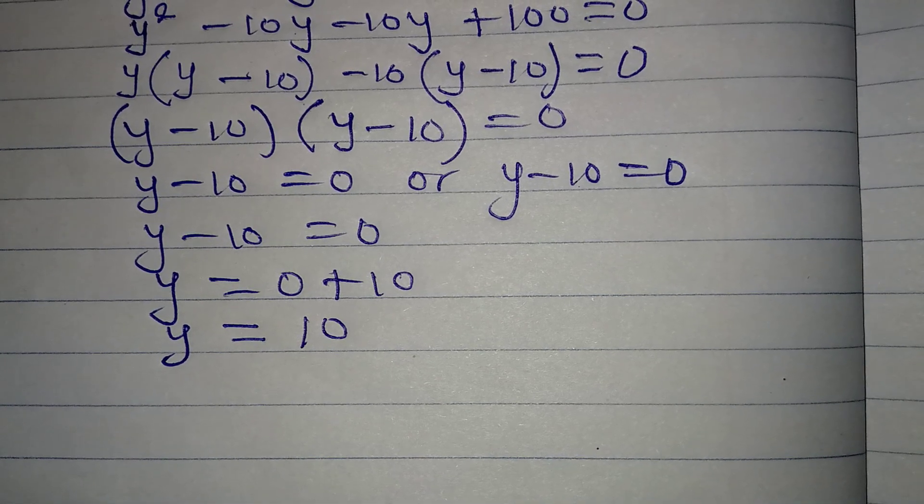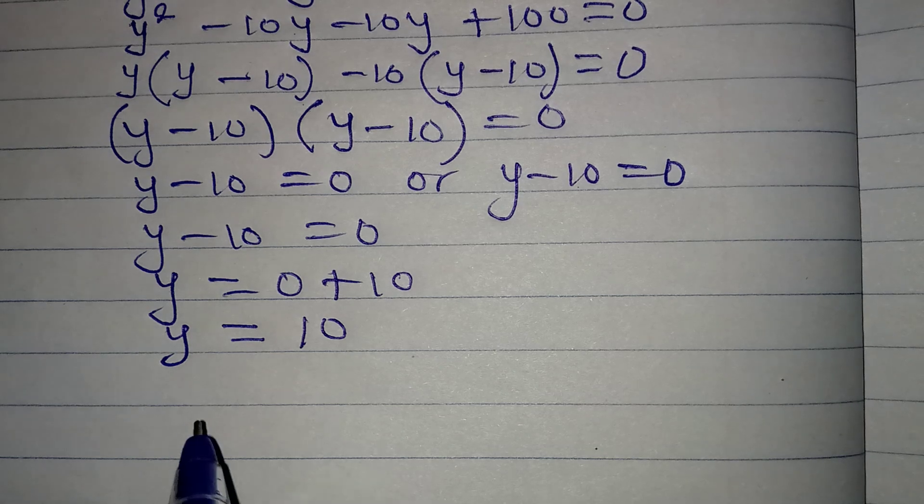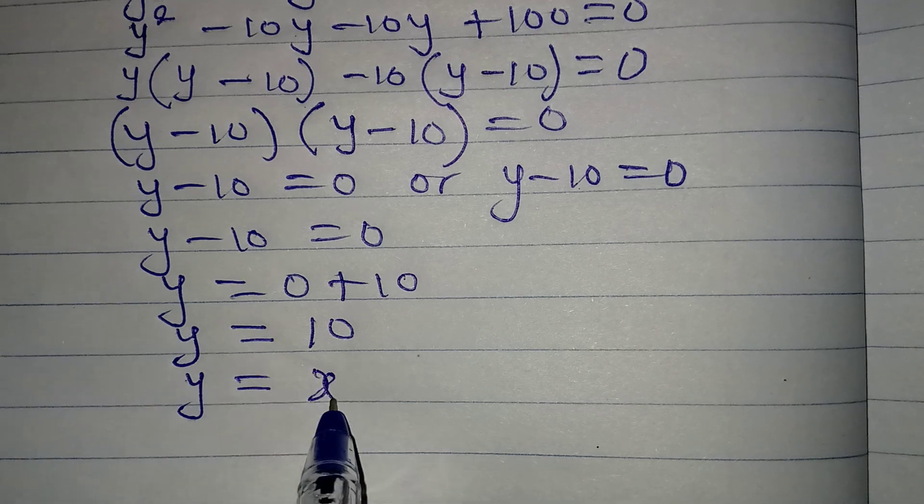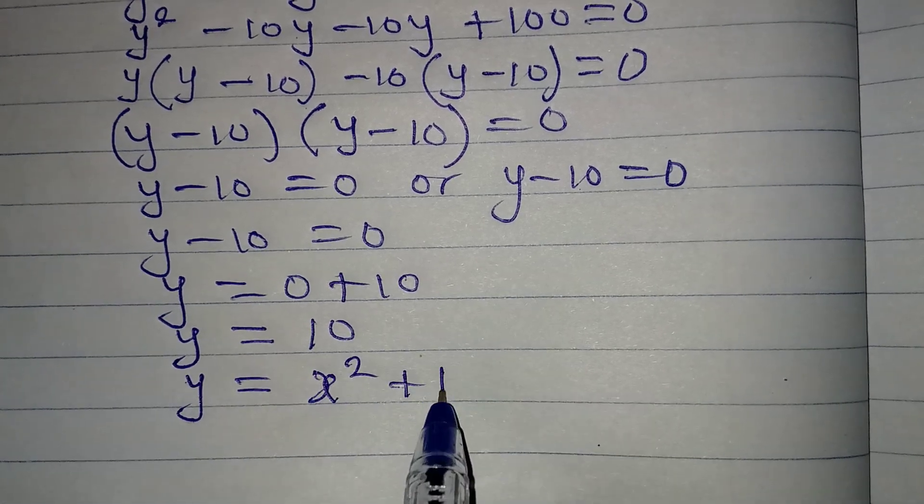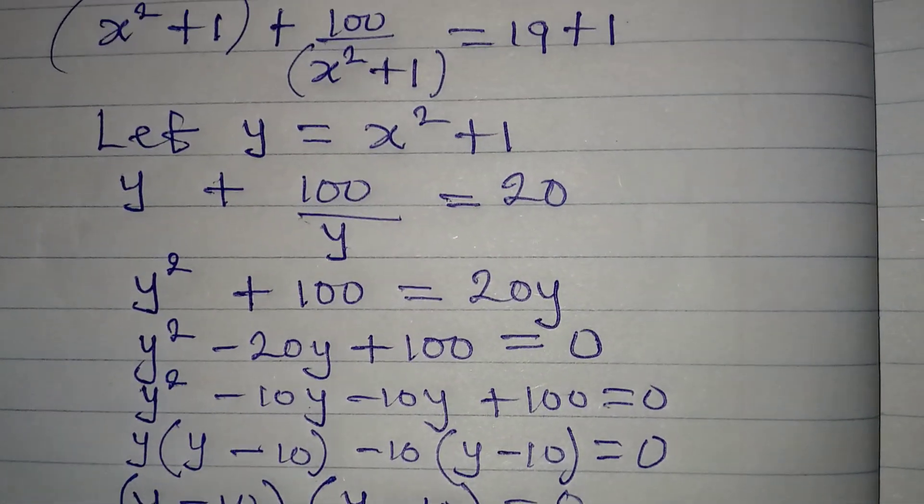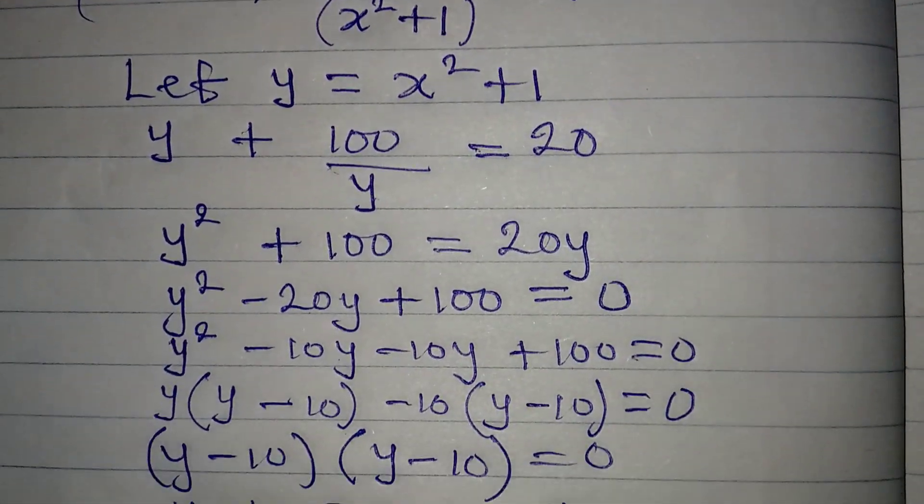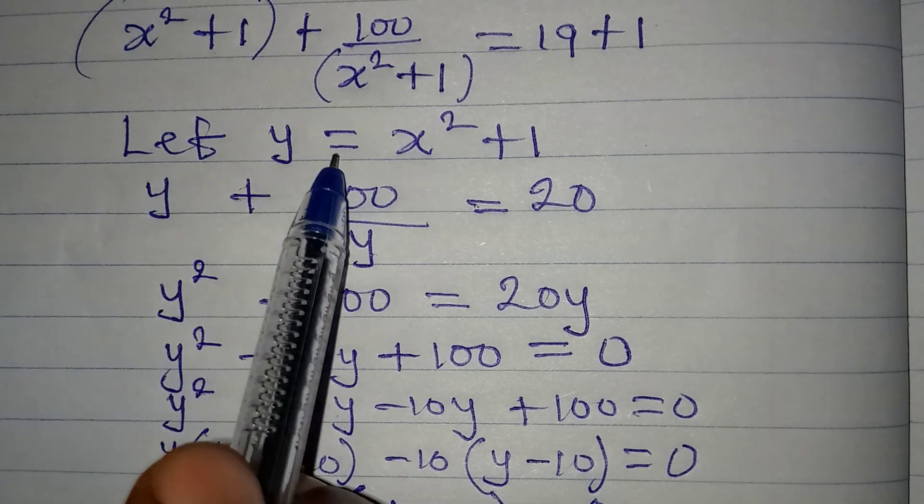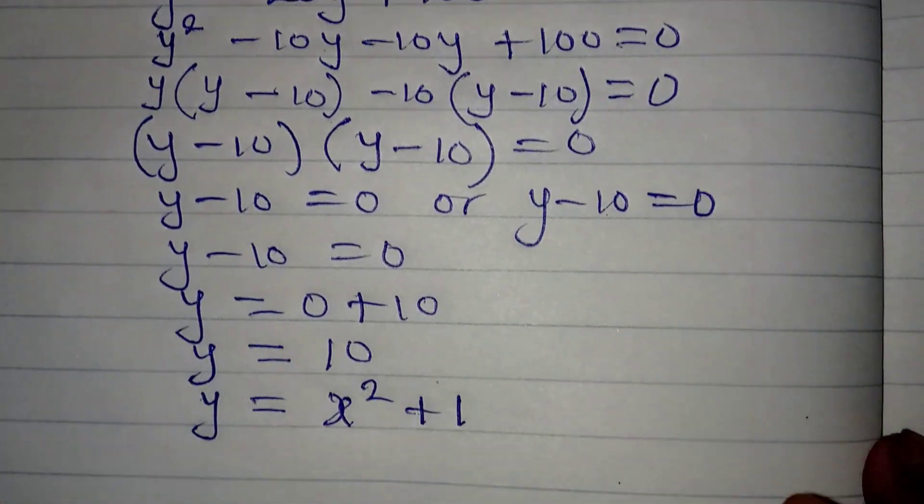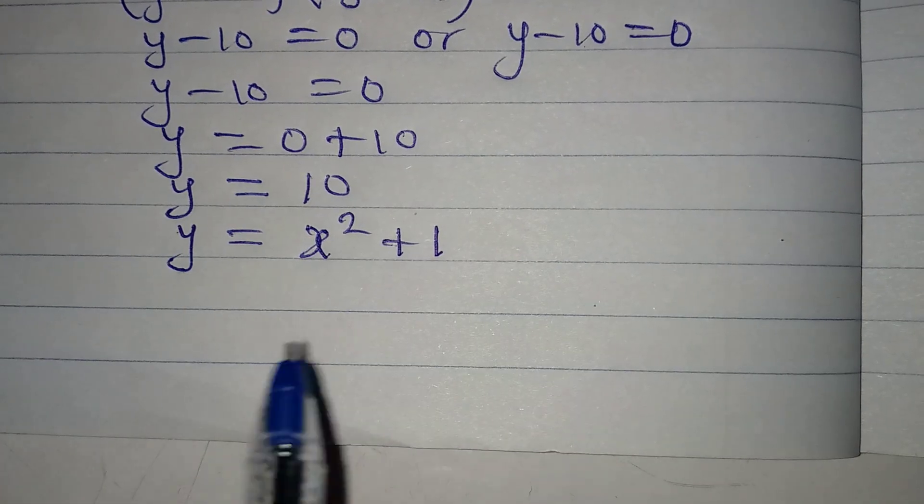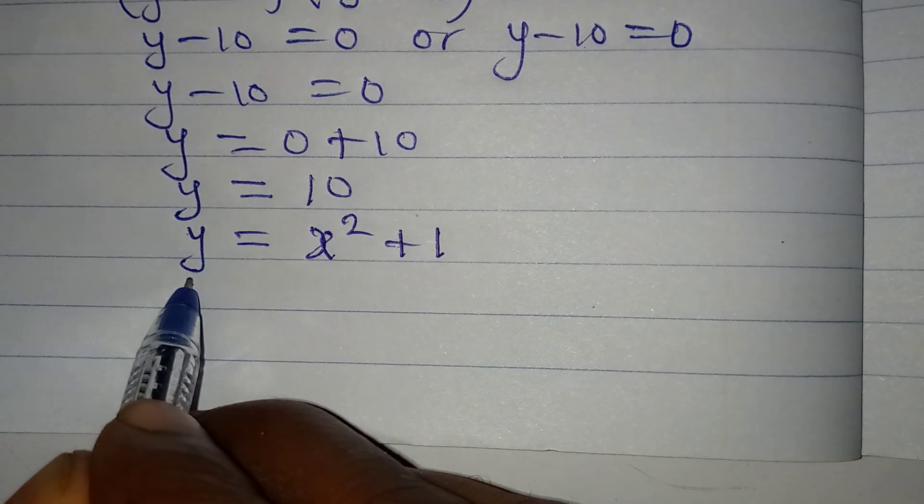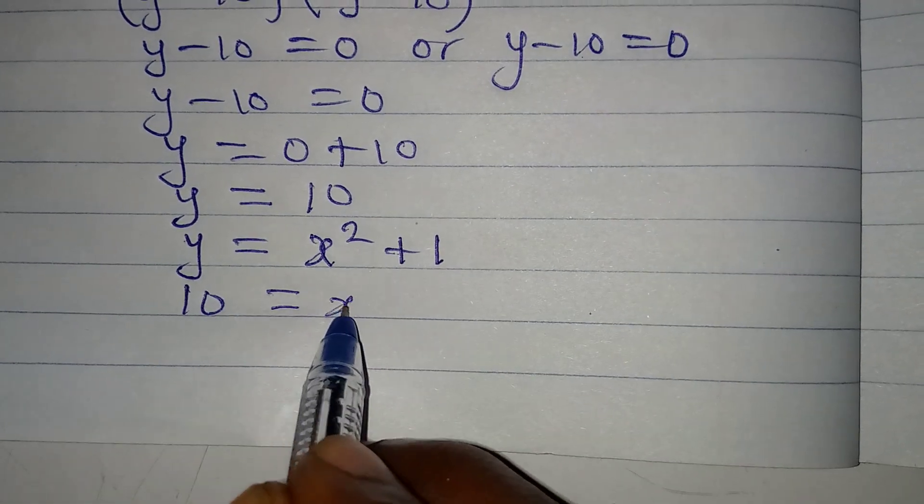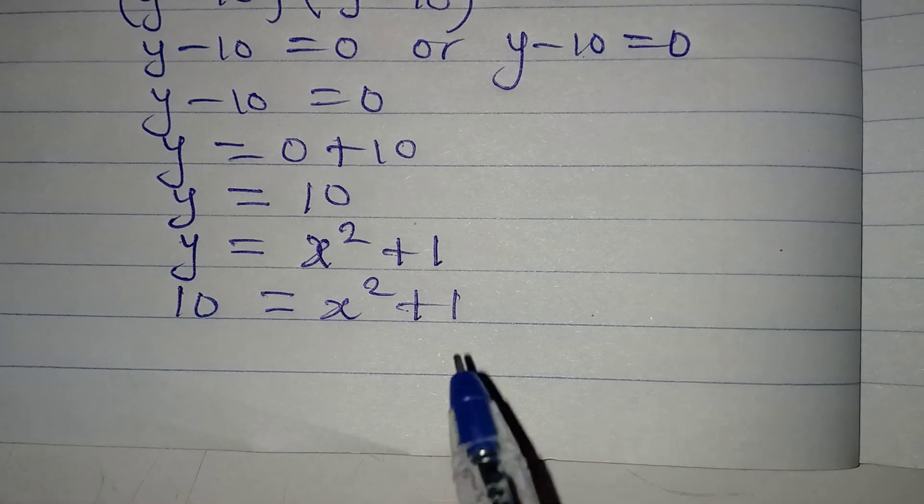Rather, we're looking for x, but we said that y is equal to x squared plus 1. Let's go back there. See, it's here when we said let y be equal to x squared plus 1. So we brought that back here. So now that y is 10, so I'll have 10 here. It should be equal to x squared plus 1.